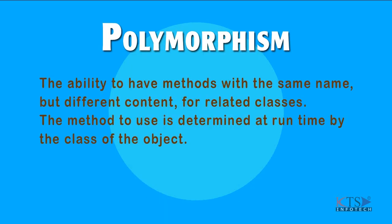Polymorphism is the ability to have methods with the same name but different content for related classes. The method to use is determined at runtime by the class of the object.